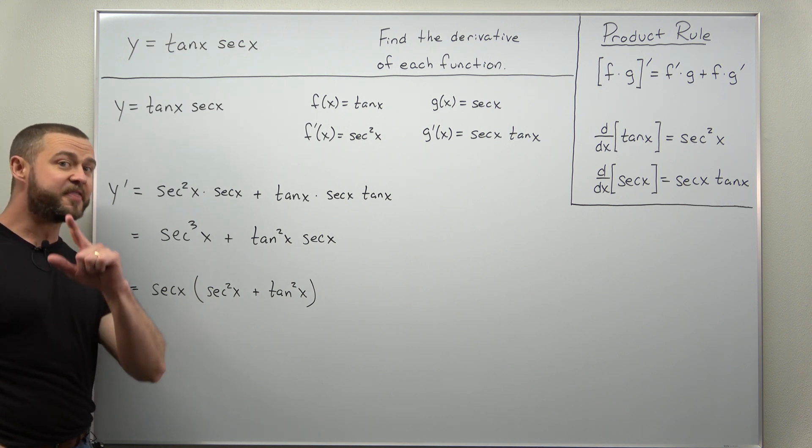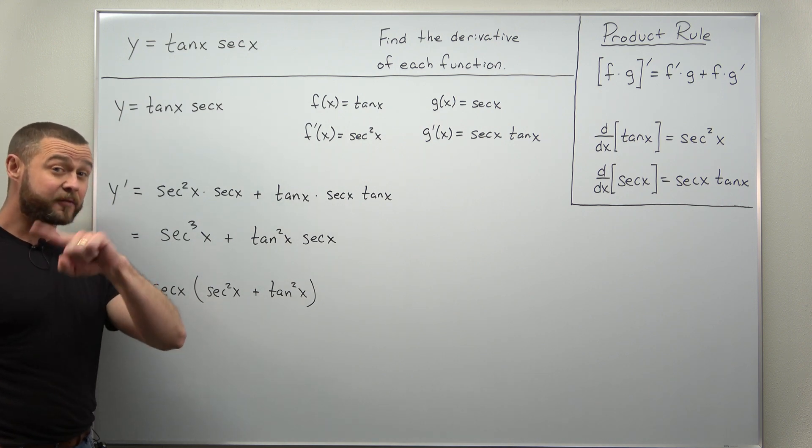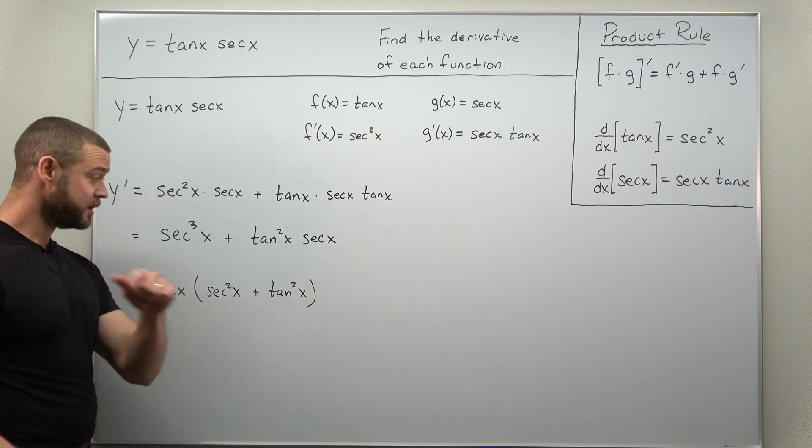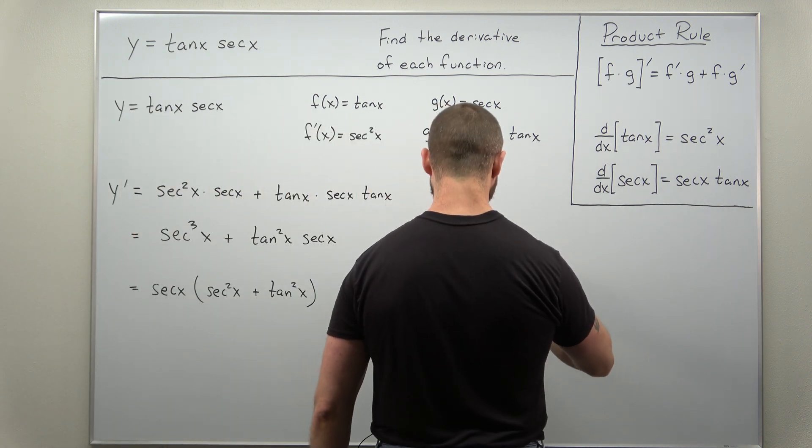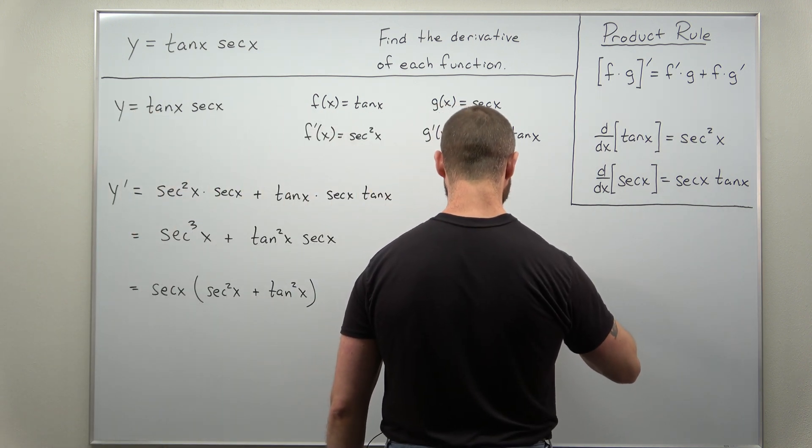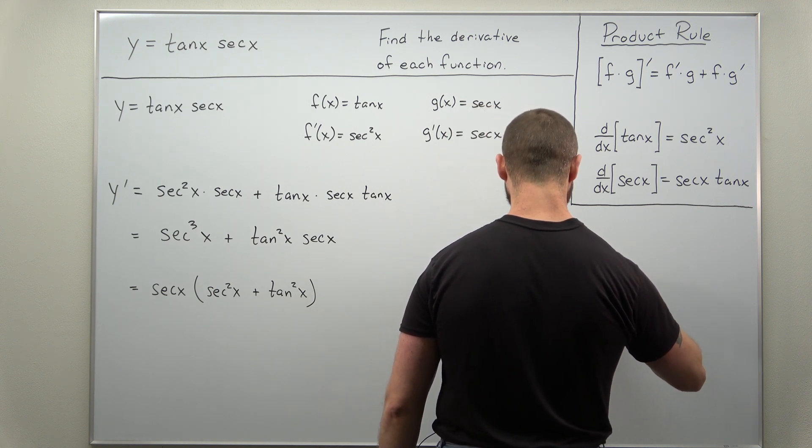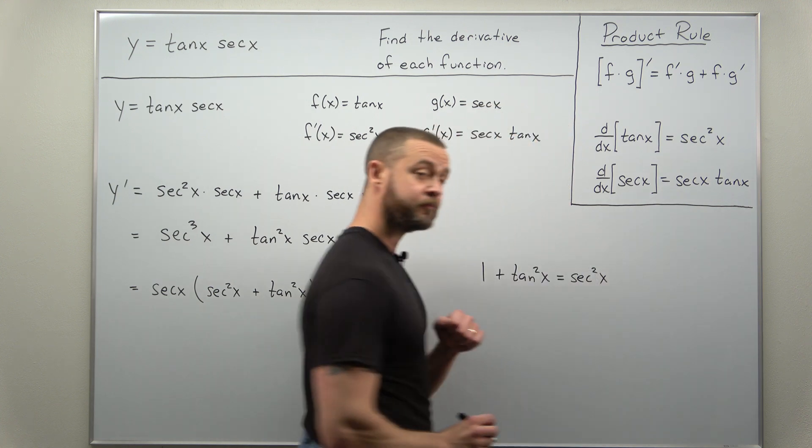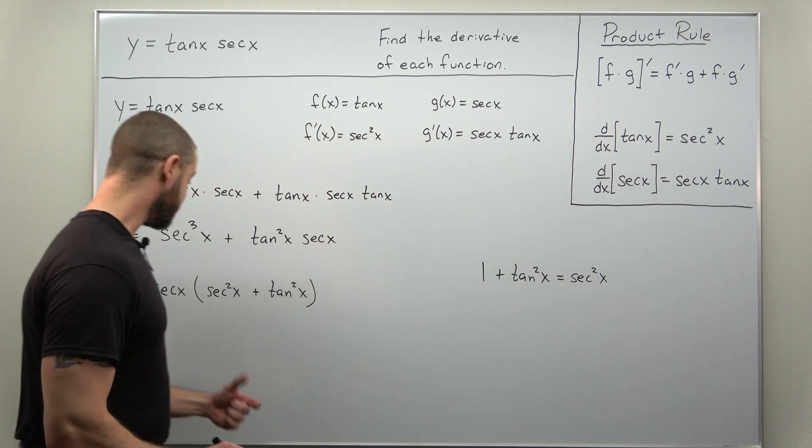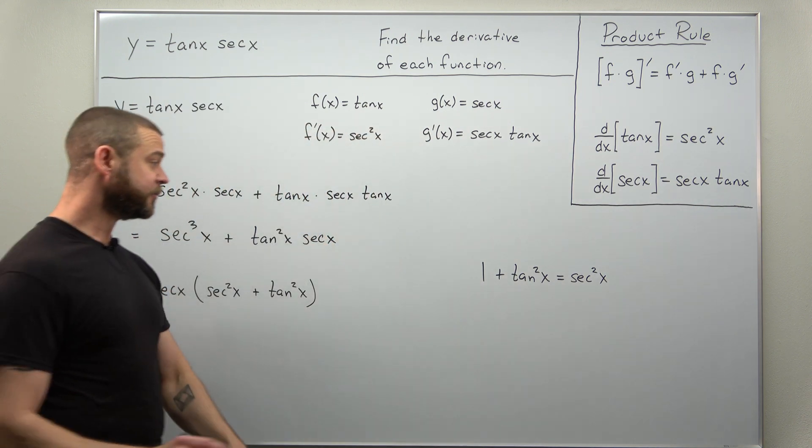Now be careful if you do simplify this way. Make sure you are comfortable with your Pythagorean identities for tangent and secant. Your identity is one plus tangent squared of x equals secant squared of x.